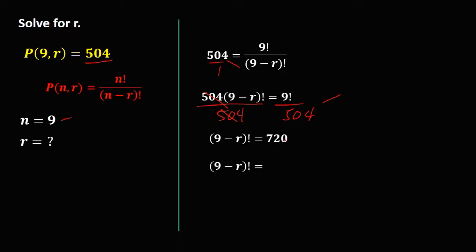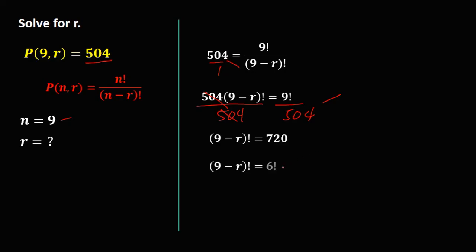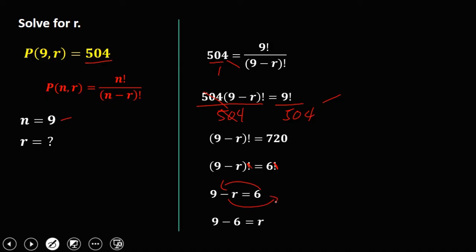So (9 minus R) factorial equals 9 factorial divided by 504, which is 720. We need to rewrite 720 in factorial form — trial and error: 5 factorial is 120, 6 factorial is 720. So 720 equals 6 factorial. Drop the factorial since both sides have one. So 9 minus R equals 6, therefore R equals 9 minus 6, which is 3.